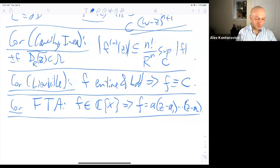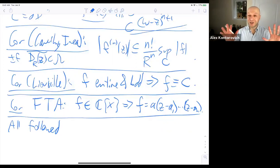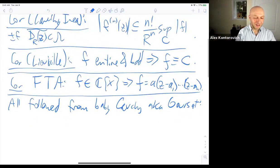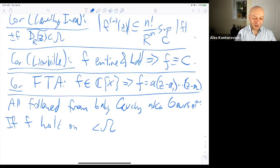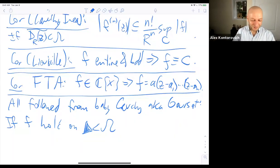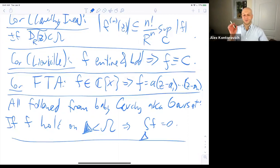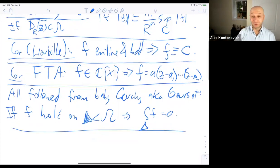All of these miraculous applications followed from the baby version — baby Cauchy, also known as Goursat: if f is holomorphic on a region that contains a closed triangle, then the integral over the boundary of that triangle of f is 0. The proof involved zooming in on the triangle, taking the worst sub-triangle each time we got four more, and then using continuity once we were zoomed in far enough.